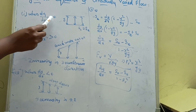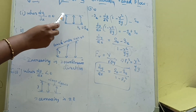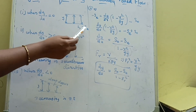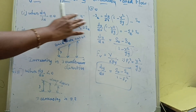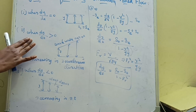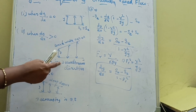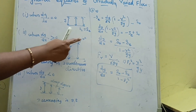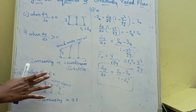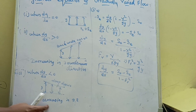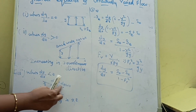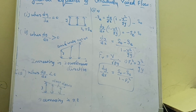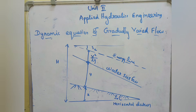Now we examine the equation under different conditions. First condition: dy/dx equals 0 — the depth is constant along the flow direction, meaning S-naught equals S-e. Second condition: dy/dx greater than 0 — the depth is increasing in the downstream direction; this profile is called the backwater curve. Third condition: dy/dx less than 0 — the flow depth is decreasing along the length. This completes the derivation of the dynamic equation of gradually varied flow. Thank you.